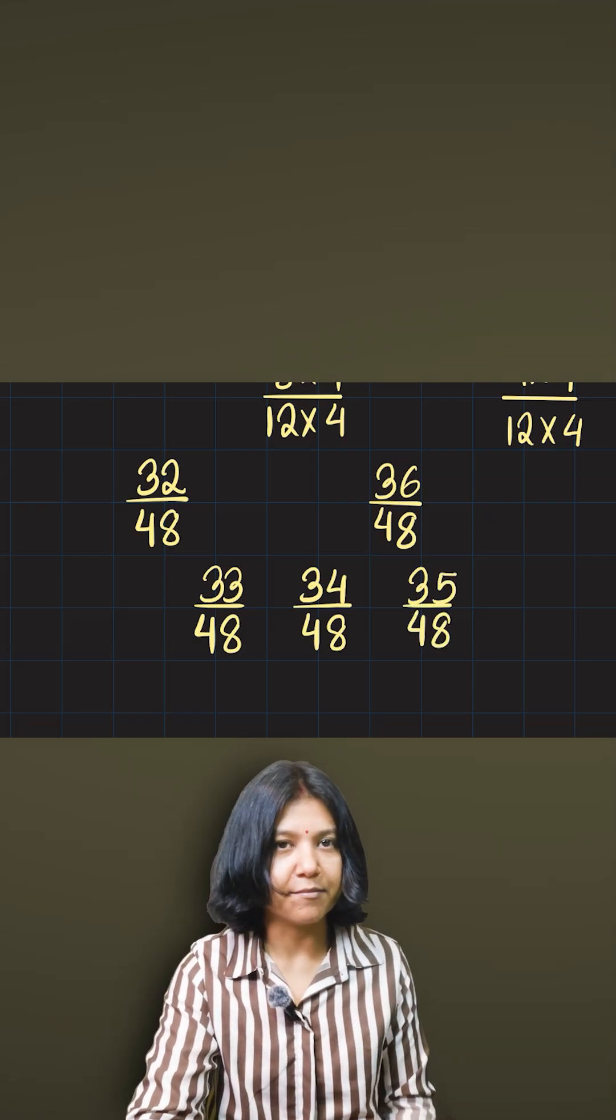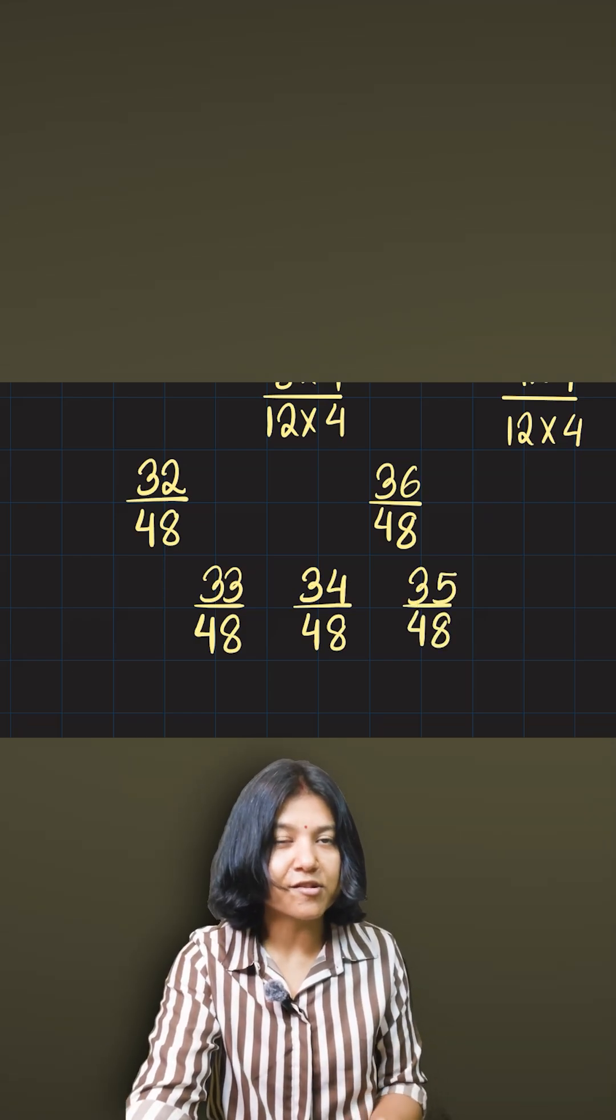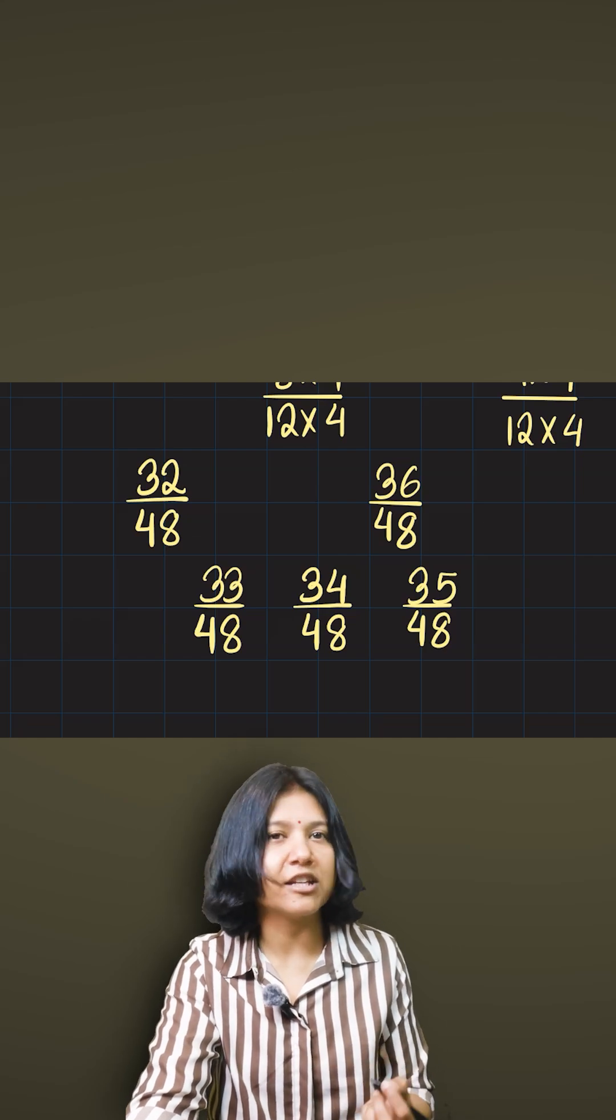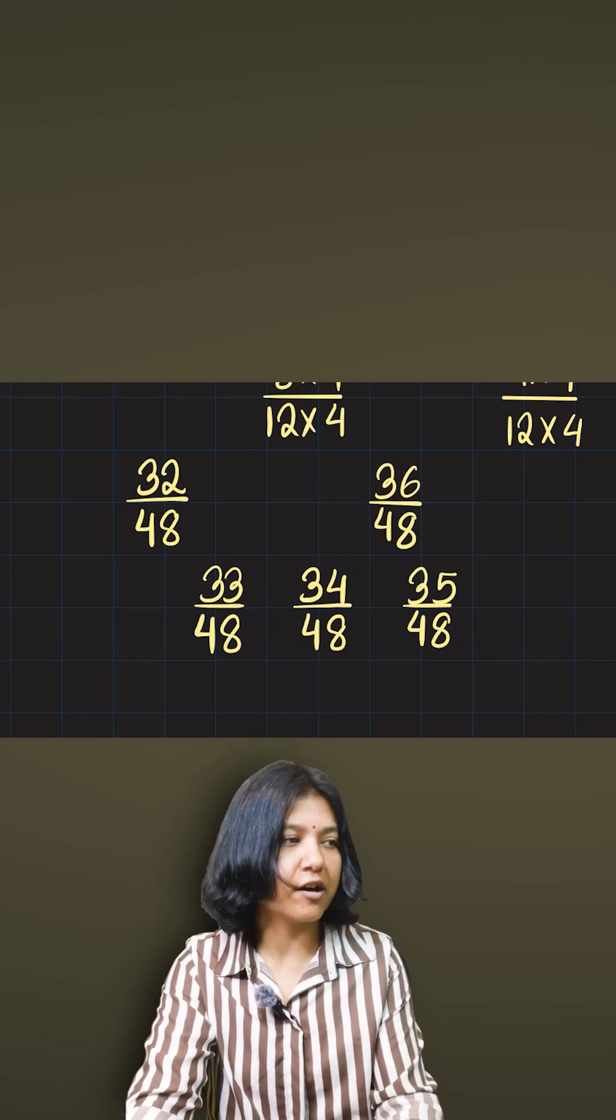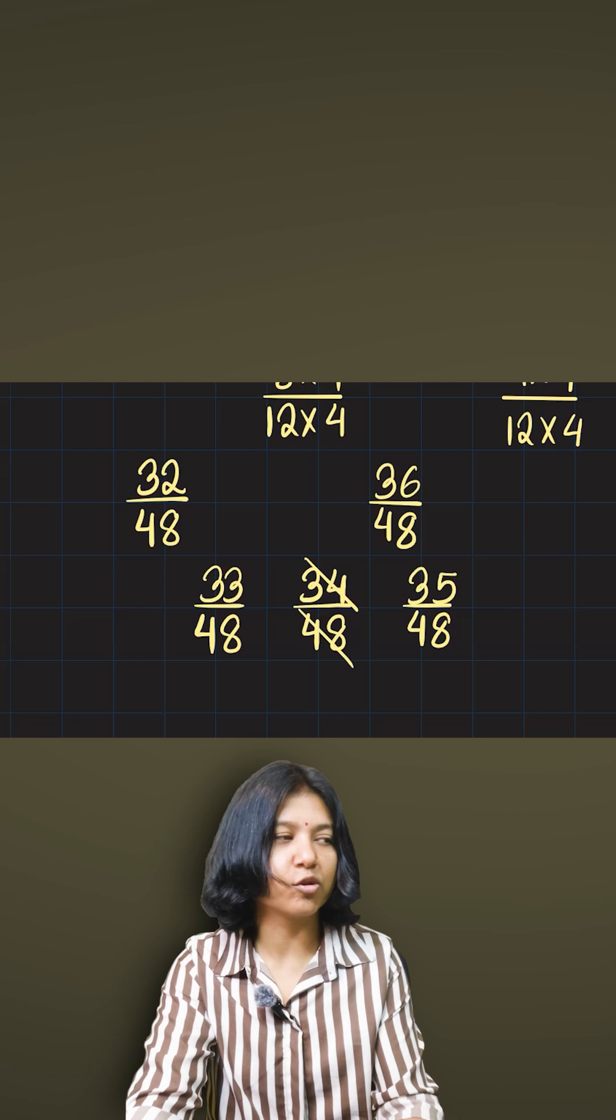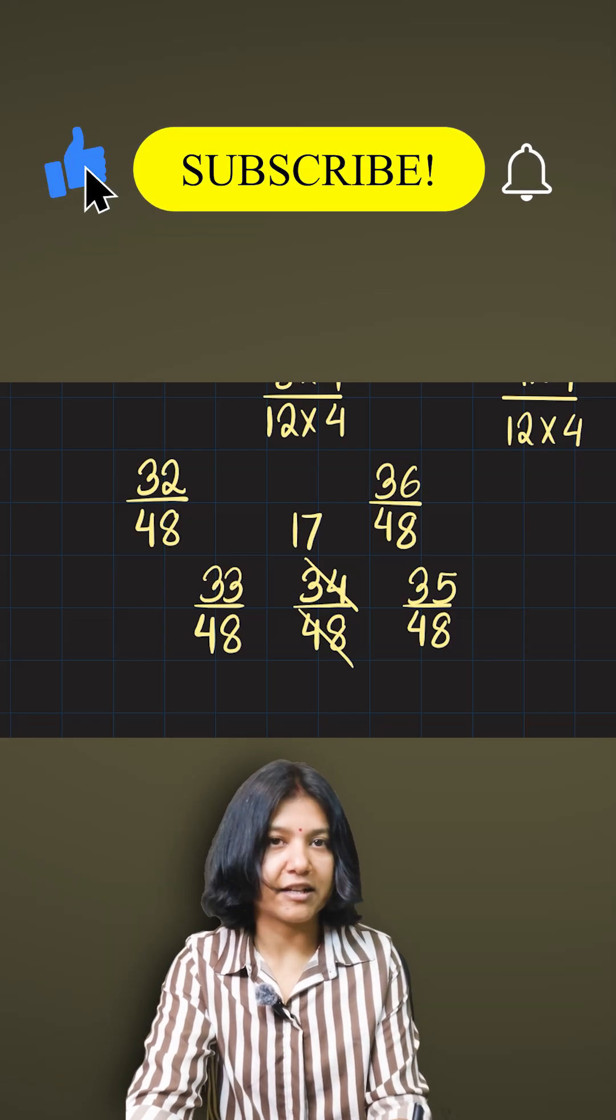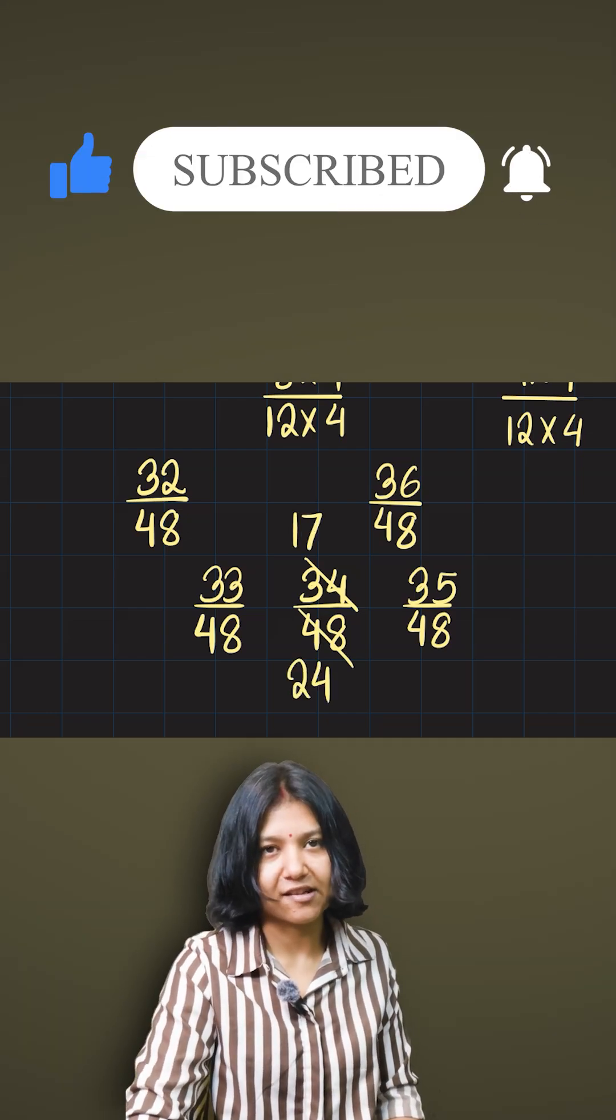33/48, 34/48, and 35/48. So you get the exact number of rational numbers. This is the exact method we use to find the rational numbers between any two fractions. Note that you can go ahead and simplify the middle one because both are divisible by two. That is how you approach questions like this.